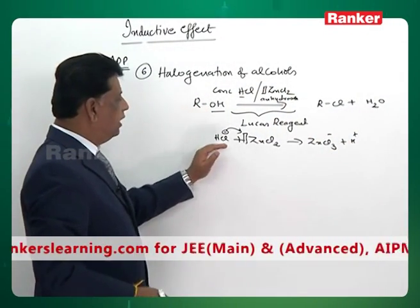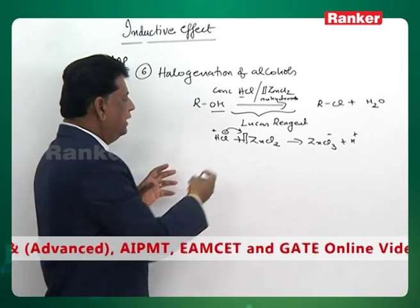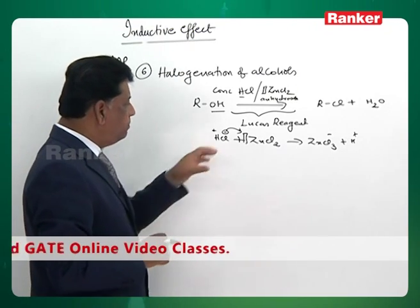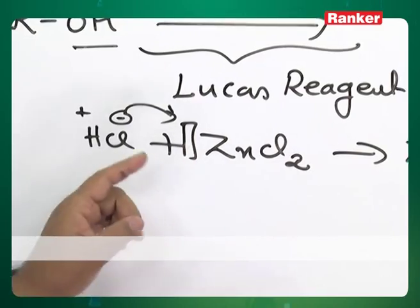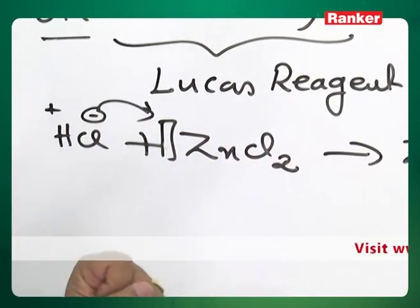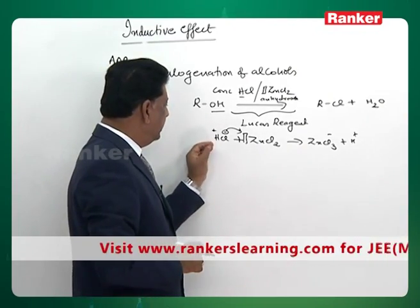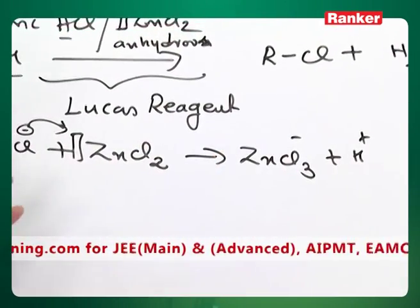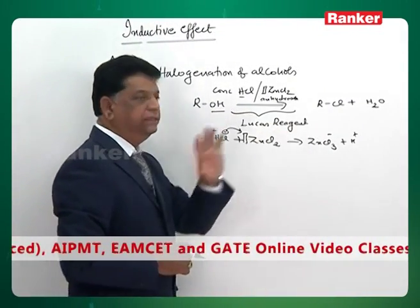Even without zinc chloride, HCl can split into plus minus. But in presence of anhydrous zinc chloride which has a vacant orbital, it accepts Cl minus readily and becomes ZnCl3 minus and H plus, because it is Lewis acid, holds the Cl minus part and H plus is released.